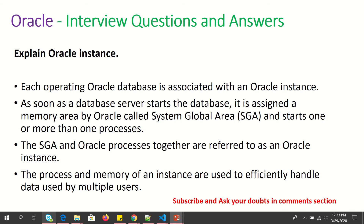Next, explain what is an Oracle instance. Each operating Oracle Database is associated with an instance. As soon as a database server starts, it is assigned to a memory area called Oracle System Global Area (SGA) and starts one or more processes. The SGA and Oracle processes together are referred to as an Oracle instance. The process and memory of an instance are used to efficiently handle data used by multiple users.